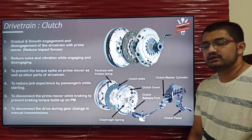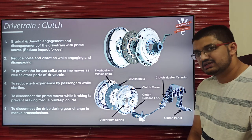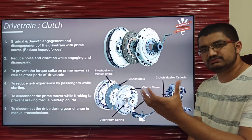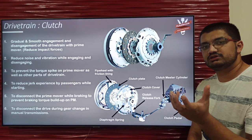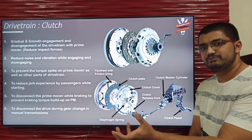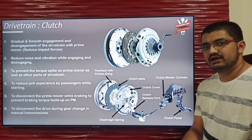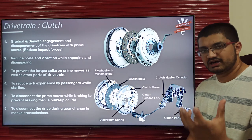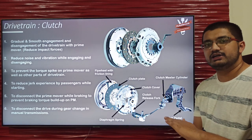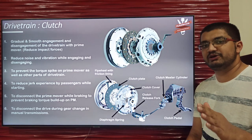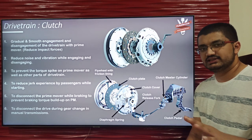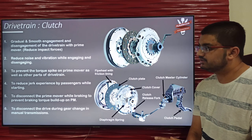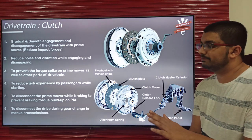If it is an IC engine and this braking torque builds up — you may have experienced this: if you release the clutch late, the IC engine stalls because there is excess torque on it. The same scenario happens during braking; if the clutch is not disengaged, the torque will build up on the IC engine and it will stall. So the clutch is used to disconnect the prime mover while braking.